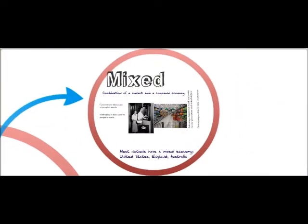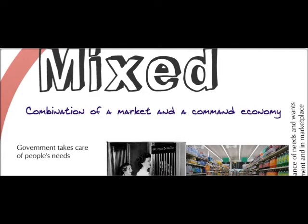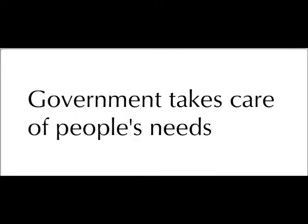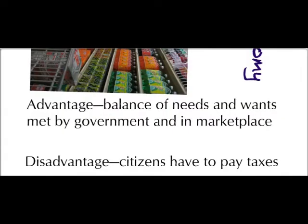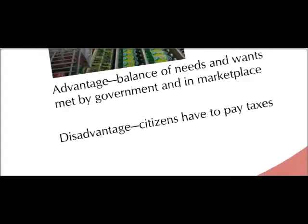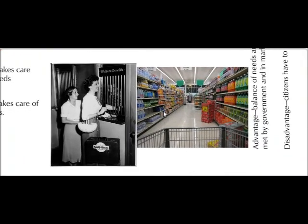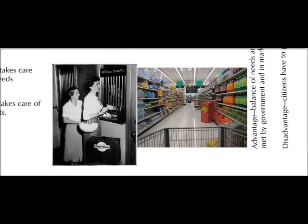The final kind of economy is a mixed economy. Most nations have a mixed economy — the United States, England, Australia, and most countries in the world. This is a combination of a market and a command economy: the government takes care of people's needs, but the marketplace takes care of people's wants, providing more of a safety net. The advantage is a balance of needs and wants met by both the government and the marketplace. The disadvantage is that citizens have to pay taxes. Looking at these two pictures, we see welfare benefits providing a safety net for the poor alongside a supermarket full of goods that appeal to everyone. The United States falls under this category.